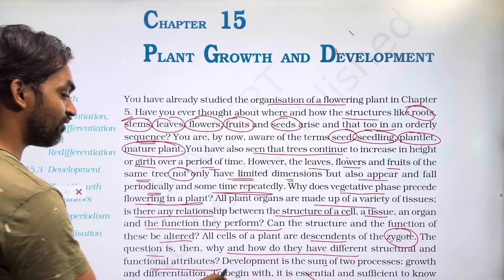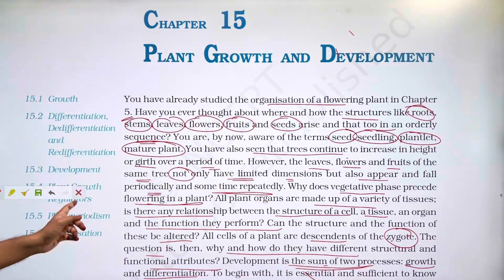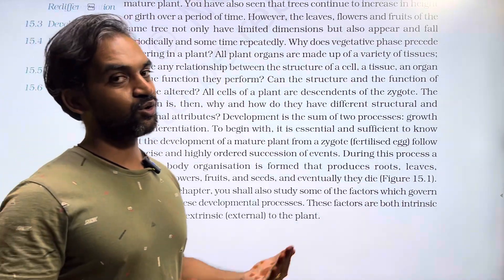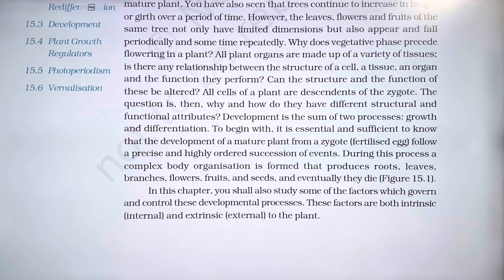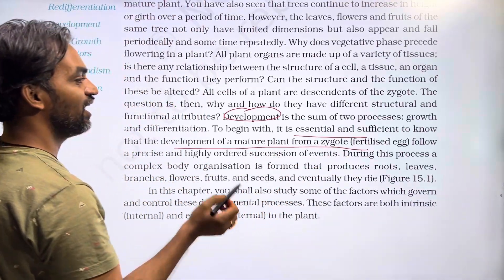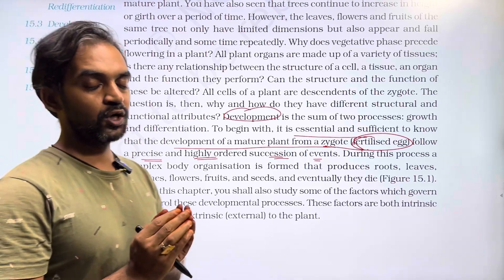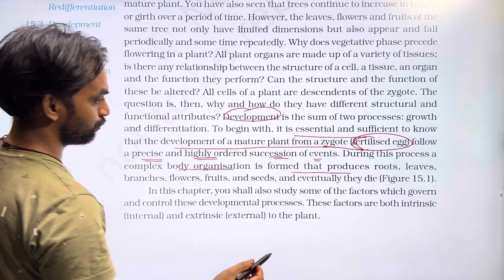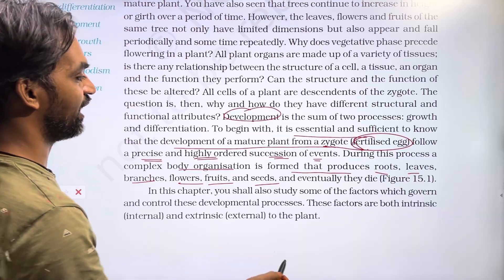Development is the sum of two processes: growth and differentiation. This is an important note — the development of a mature plant from a fertilized zygote follows a precise and highly ordered succession of events. From one zygote, an entire plant forms, with a complex body organization that produces embryo, fruit, stem, leaves, branches, flowers, and seeds, and eventually the plant dies.